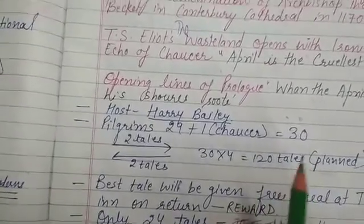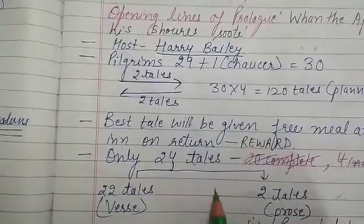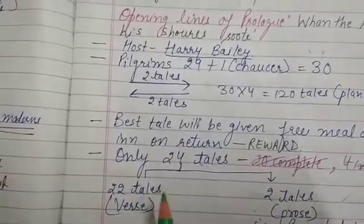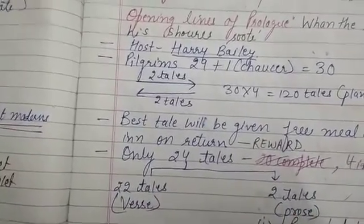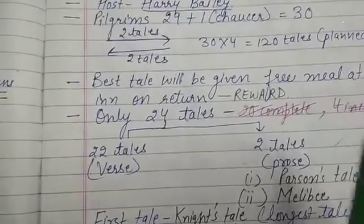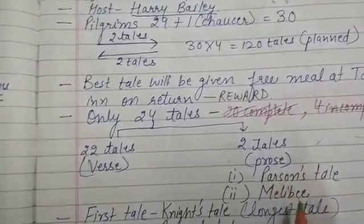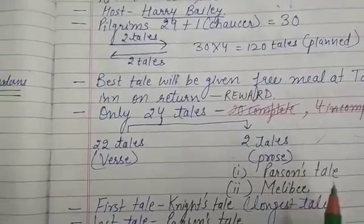120 tales were planned in total, but only 24 tales were completed. Of these 24 tales, 22 are verse tales and 2 are prose tales. The 2 prose tales are Parson's Tale and Melibee's Tale.